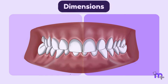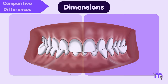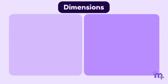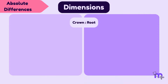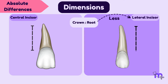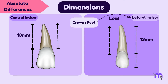Let us first observe the dimensions. The comparative difference is the overall size — the crown of the maxillary central incisor is larger in all dimensions when compared to the lateral incisor. The absolute difference is that the crown-to-root ratio is less in the lateral incisor. Although both teeth share an average root length of 13 mm, due to the varying crown lengths, the crown-to-root ratio results in the appearance of a slightly longer root in the maxillary lateral incisor. The root of the single lateral incisor is one and a half times the crown.